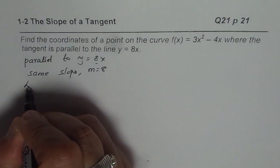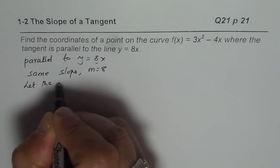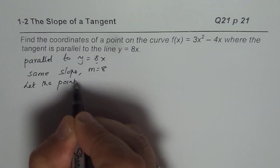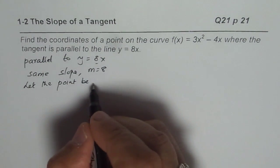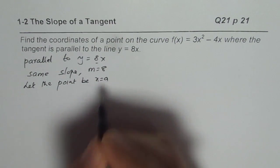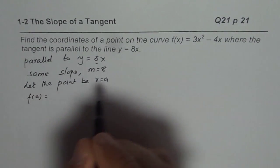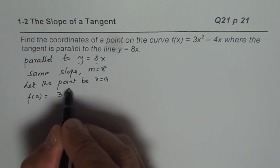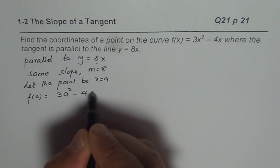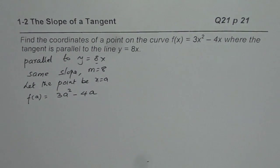Here we are given the slope, but we have to find the point. So, let the point be x = a. If I write x = a, what is f(a)? f(a) will be 3a² - 4a.